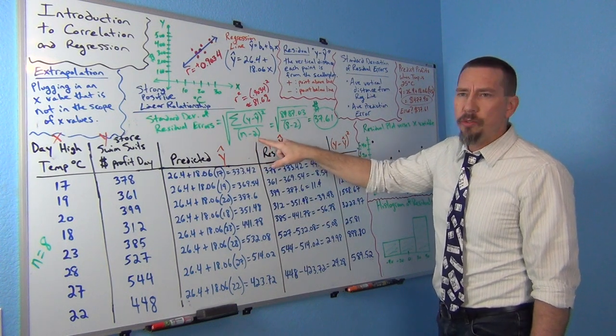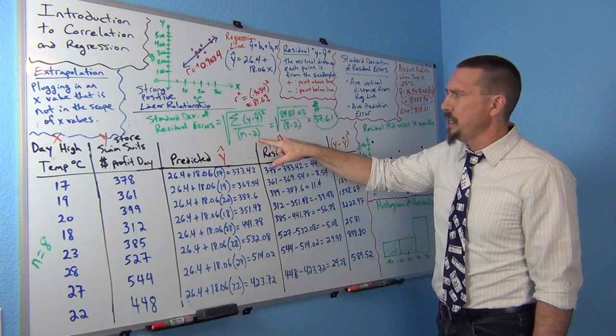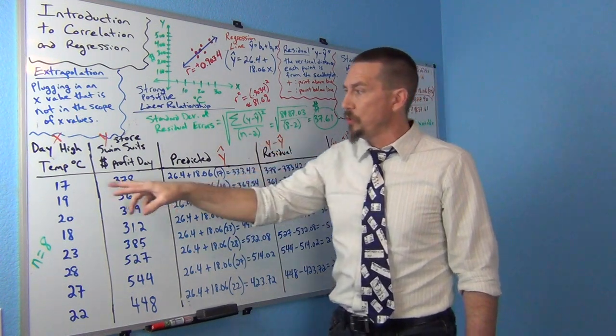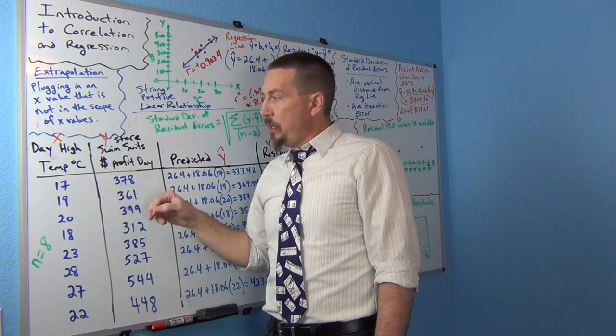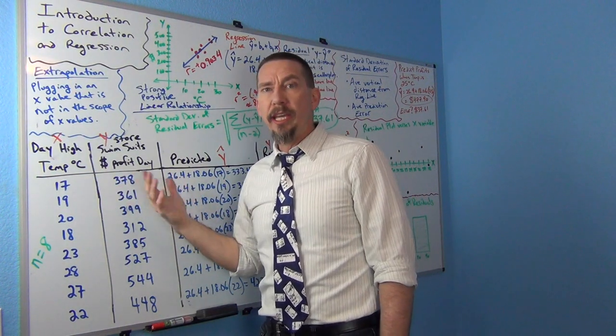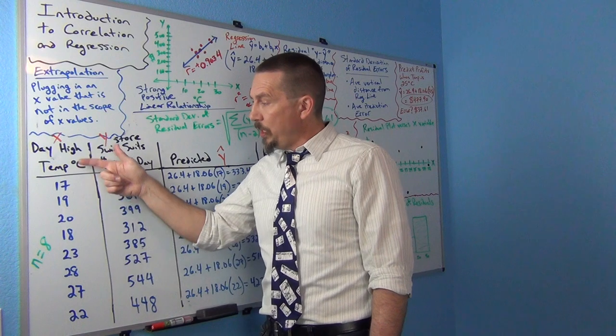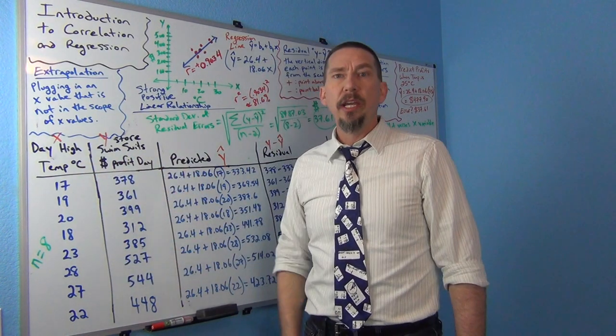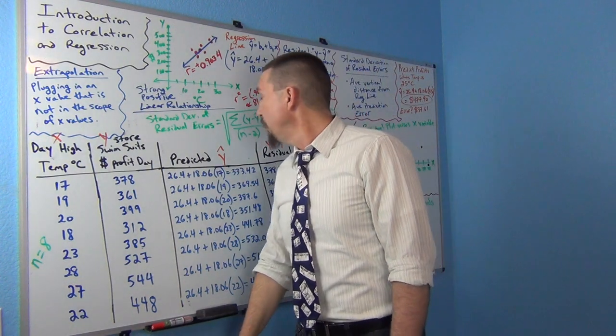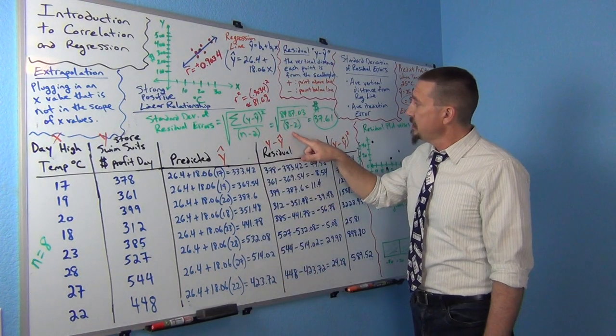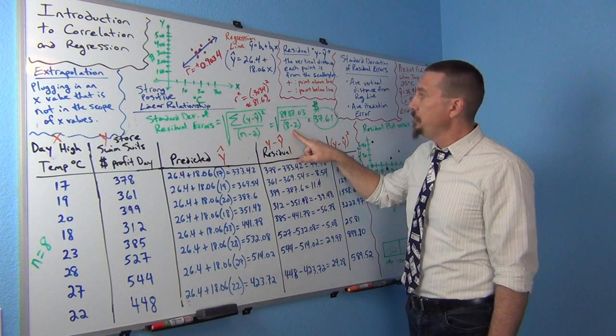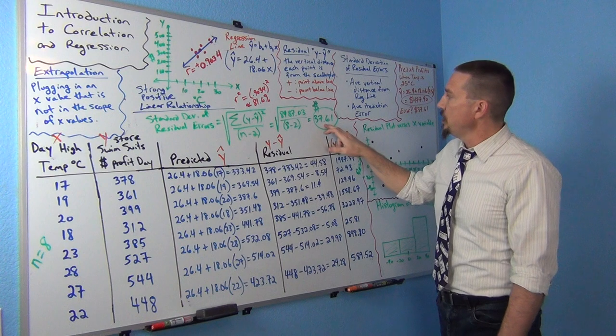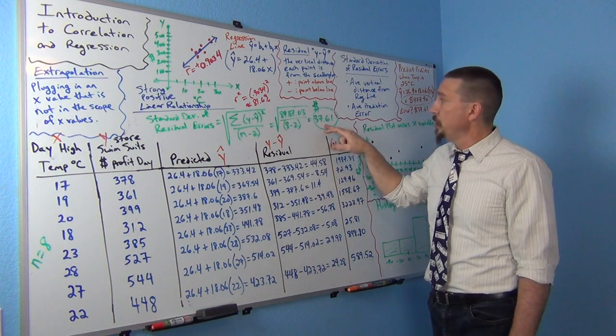Now the sample size, and notice it says n minus 2. The degrees of freedom for one data set was n minus 1, but two data sets is n minus 2, right? Remember these are ordered pairs, but there are two of them. So again, there's going to be one fixed value in this data set and one fixed value in this data set. So we say n minus 2. So 8 minus 2 would be 6. That's going to be our degrees of freedom. And then divide them and take the square root, and we get the standard deviation of the residual errors is about 37.61.